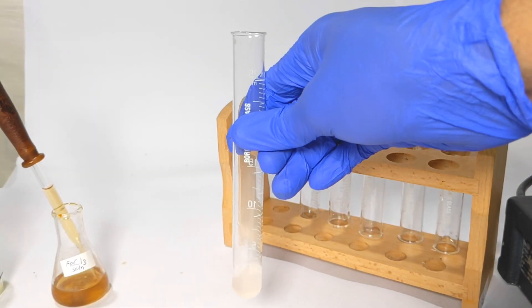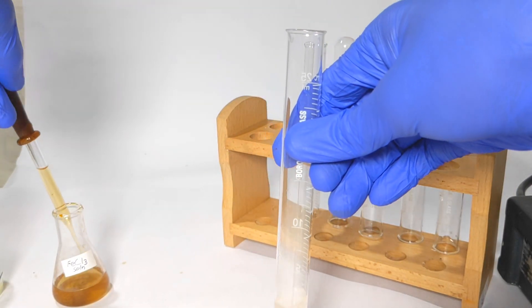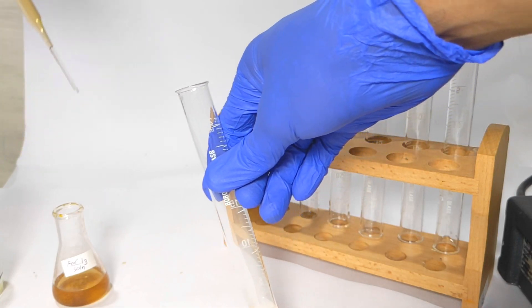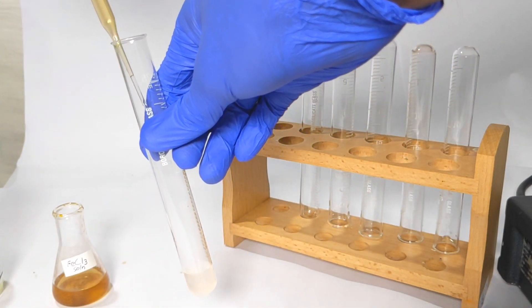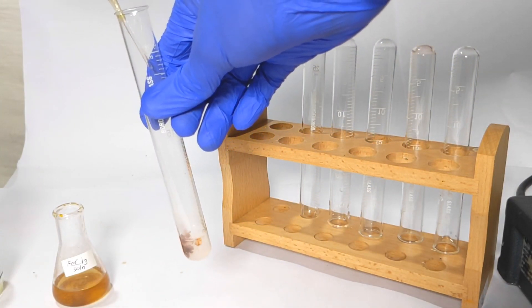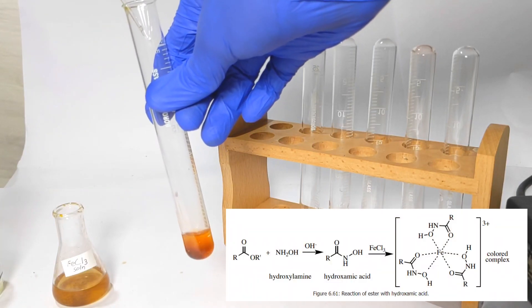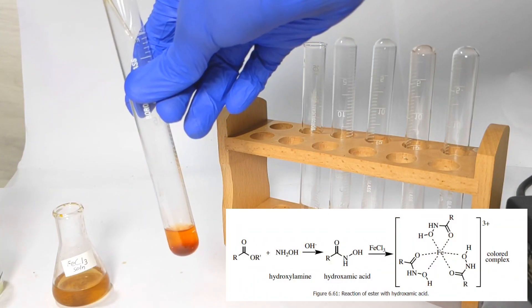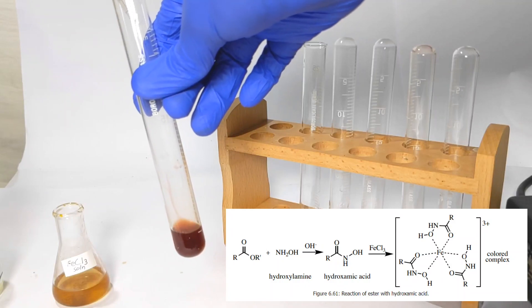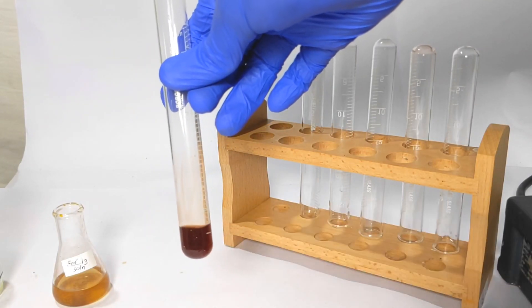Now we add dilute ferric chloride or iron 3 chloride solution to the test tube. You will observe the formation of a brown color. This is due to the formation of a complex between the ferric ion and the hydroxamic acid. This confirms the presence of an ester.